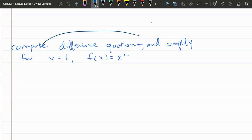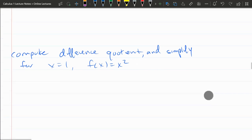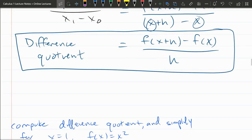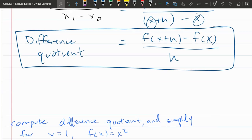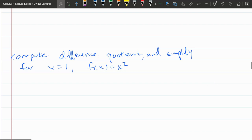The first thing we need to do is write down the difference quotient. This should be on your note page, or you should begin to memorize this. I'm going to scroll up to where it is from the lecture. So here's our difference quotient: f(x+h) minus f(x) over h.